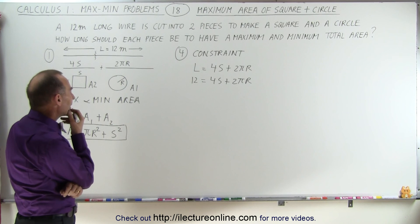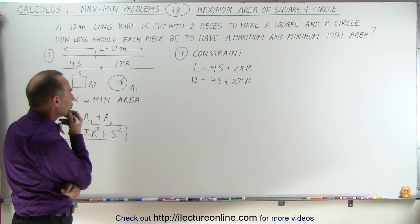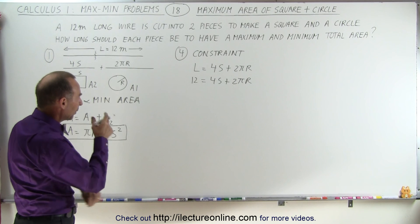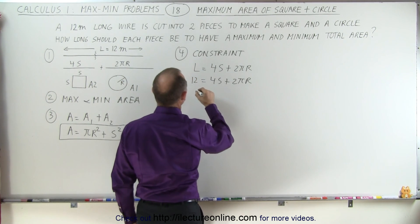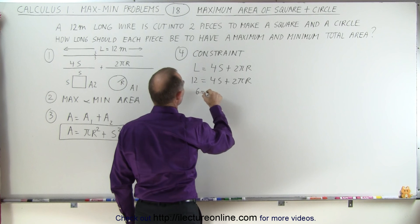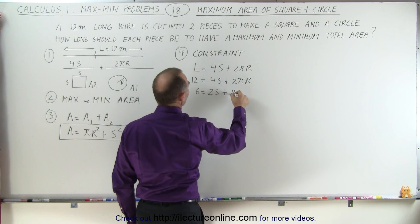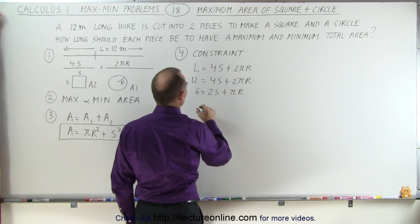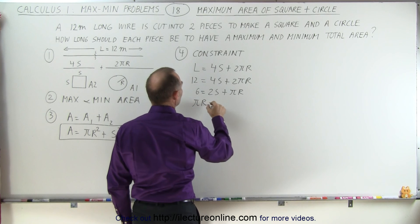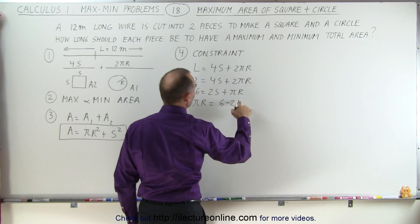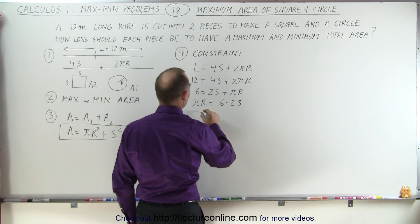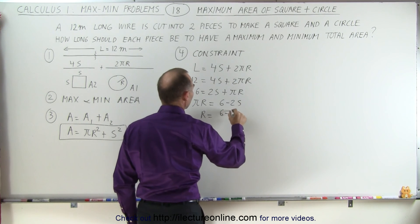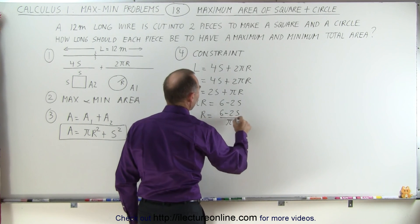We want to get rid of r, so let's solve for r. Dividing both sides of 12 = 4s + 2πr by 2 gives 6 = 2s + πr, so πr = 6 − 2s, and therefore r = (6 − 2s)/π.